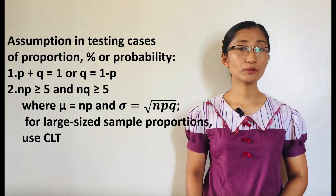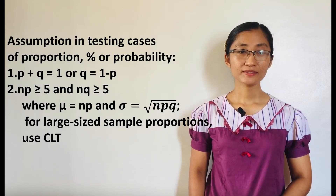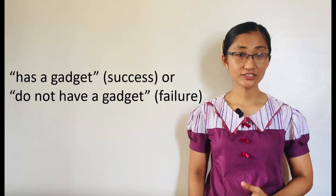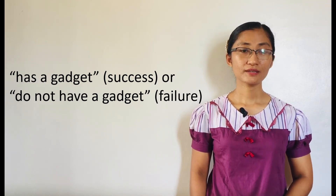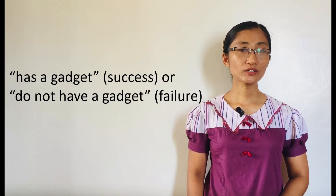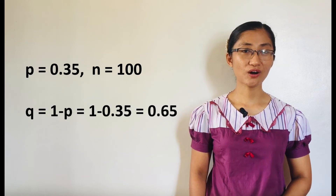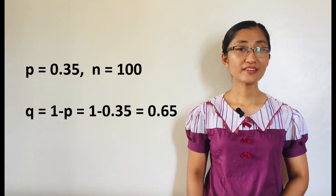For a large sample size of proportions, the Central Limit Theorem, or CLT, is used. Let us check whether the two conditions are satisfied by the previous example. The responses have exactly two outcomes: either has a gadget, the success, or does not have a gadget, the failure. Hence, the first condition is satisfied. To check the second condition, we consider the hypothesized value of the population proportion p equals 0.35, with n equals 100.